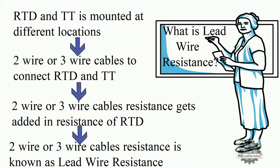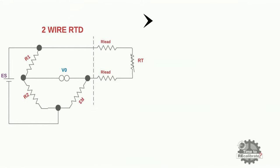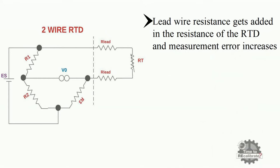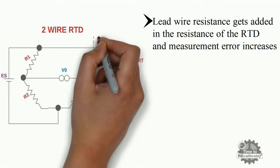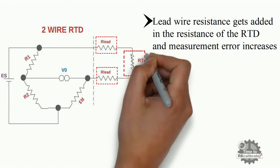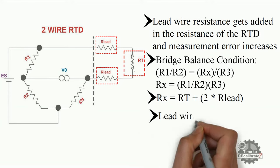These lead wires produce measurement error in temperature reading. As you can see from the circuit diagram of 2-wire RTD, lead wire resistance gets added to the resistance of the RTD, and because of the lead wire, the measurement error increases with increasing distance between the temperature transmitter and the RTD. In this circuit diagram, R1, R2, and R3 are Wheatstone bridge resistors; R-lead is the resistance of the lead wires; and RT is the resistance of the RTD. In the Wheatstone bridge balance equation, Rx is the sum of RT and 2 times the lead wire resistance, so the lead resistance clearly introduces error in measurement.